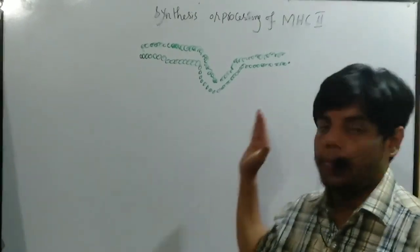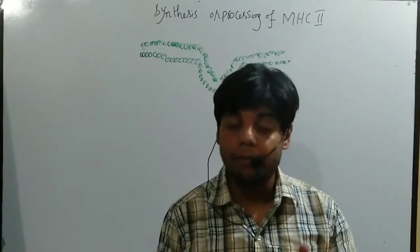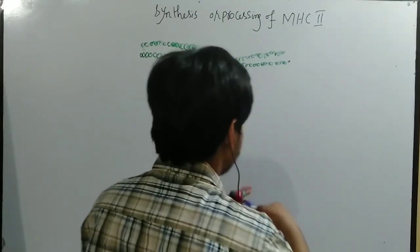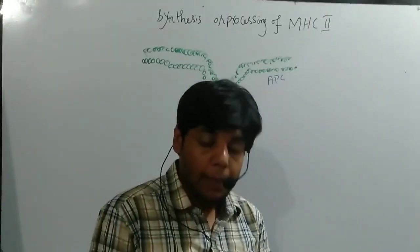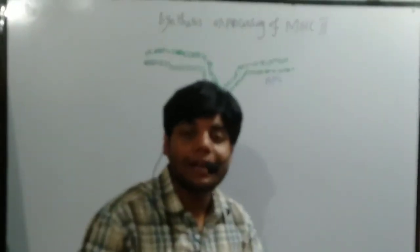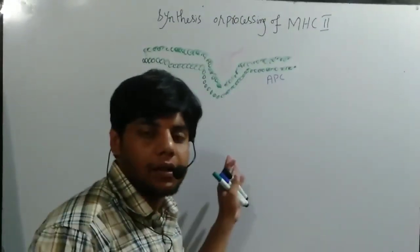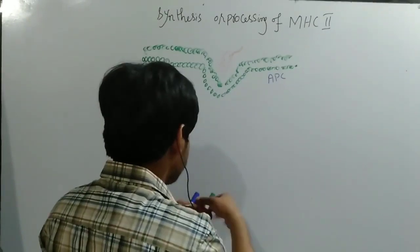This is the cell membrane, and remember we already talked that MHC2 molecules are always present in antigen presenting cells. So this is the antigen presenting cell — let's say this is the macrophage, dendritic cell, or B cell. Now this antigen presenting cell will engulf the bacteria; in this case we have a bacterial cell.